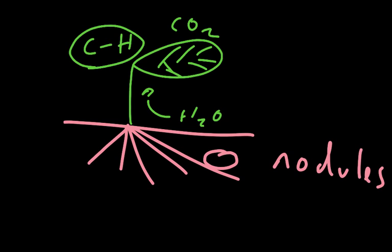These root nodules are where you find the rhizobium bacteria. The rhizobium bacteria is a very interesting bacteria because it's receiving the products of photosynthesis, the carbohydrates, from the plant.